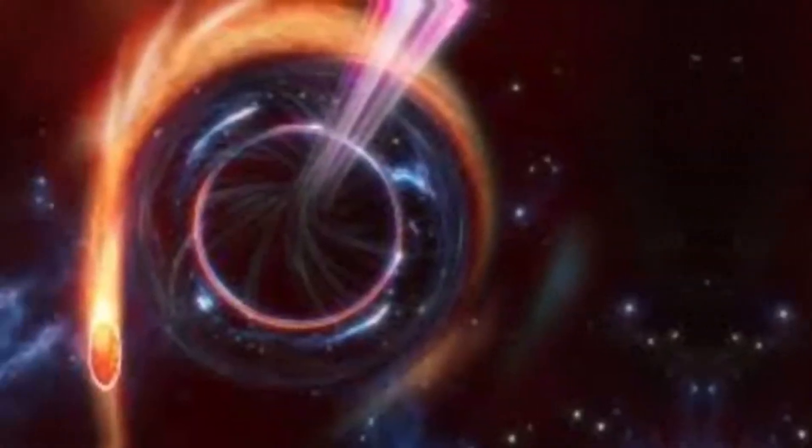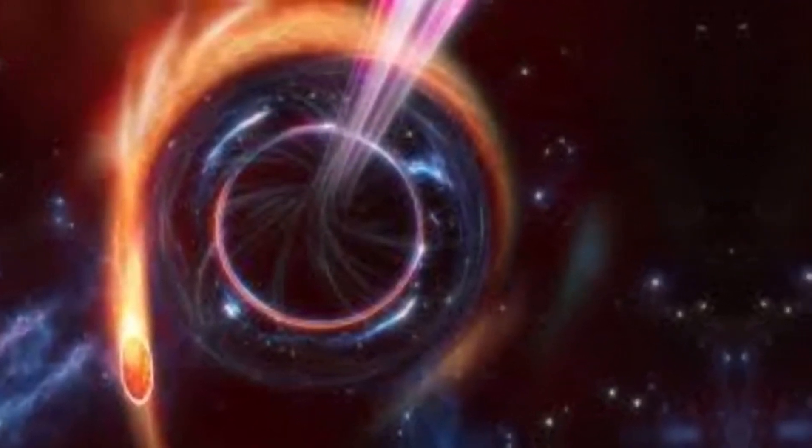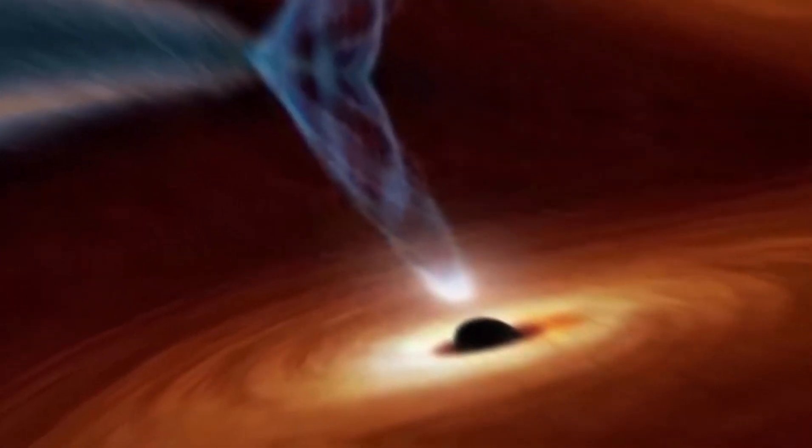Instead of a single event horizon marking the boundary beyond which nothing can escape, spinning black holes have two distinct horizons: an outer horizon and an inner one. These horizons are like invisible walls, marking the regions where the gravitational pull becomes too strong for even light to break free.